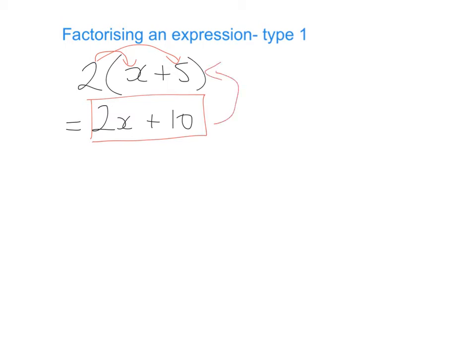It may seem complicated but actually it's very straightforward. Let's do a different question. Say we had 3y + 6 and we're asked to factorize that expression. We need to think: what do those two terms have in common? Do they have any common factors? Do they have any common letters? Hopefully what you've spotted is that the highest common factor between 3 and 6 is the number 3.